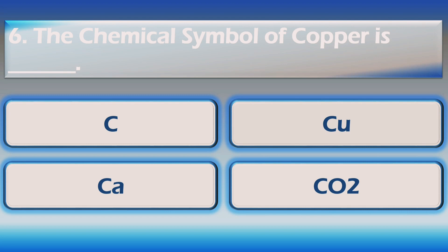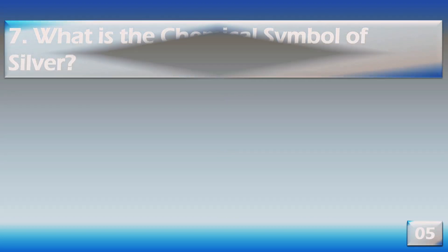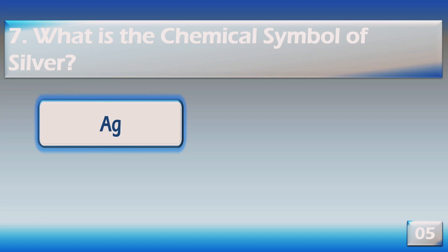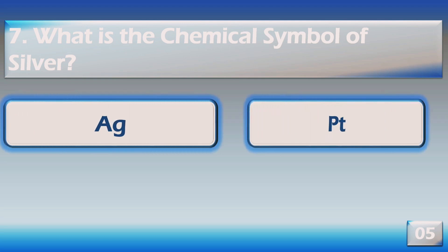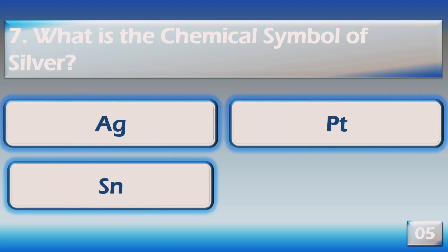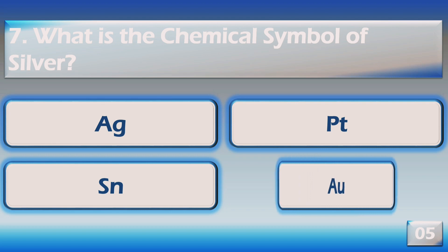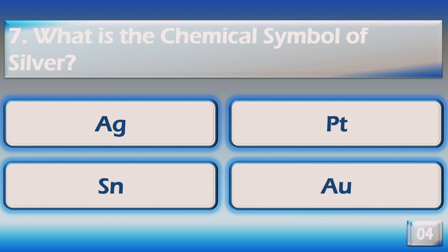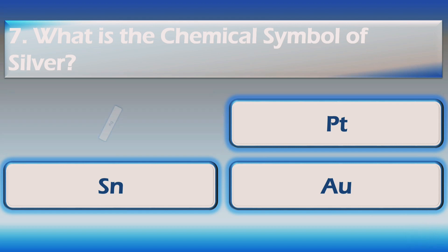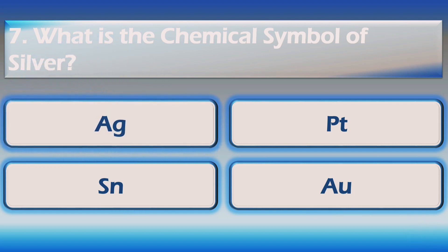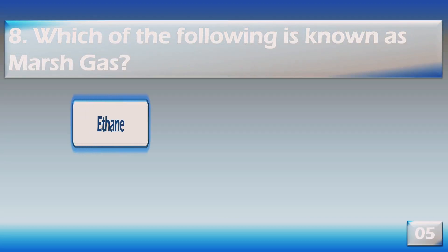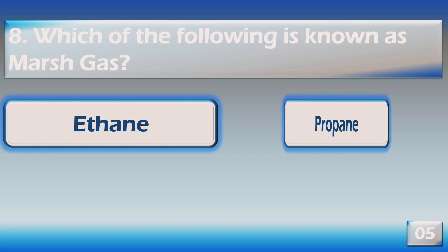The right answer is Cu. What is the chemical symbol of silver? The chemical symbol of silver is Ag.